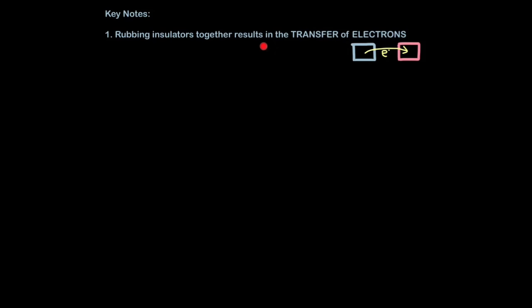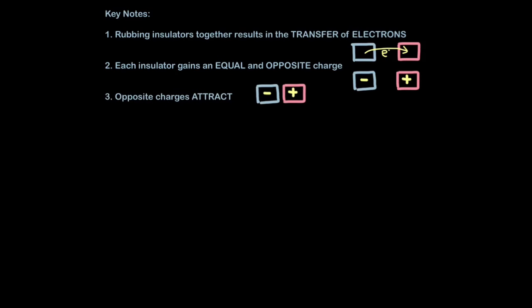So I've said quite a lot here so let's just put it into a few keynotes. Rubbing insulators together results in the transfer of electrons from one object to another. Each insulating material gains an equal and opposite charge. So they're oppositely charged, one's negative and one's positive but they're equally charged. In other words, the size of the charge is equal.